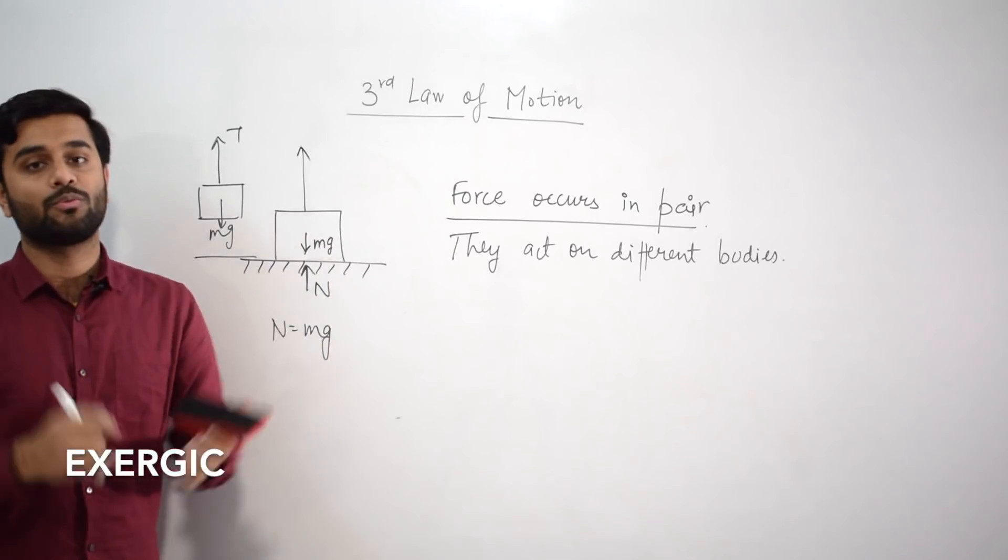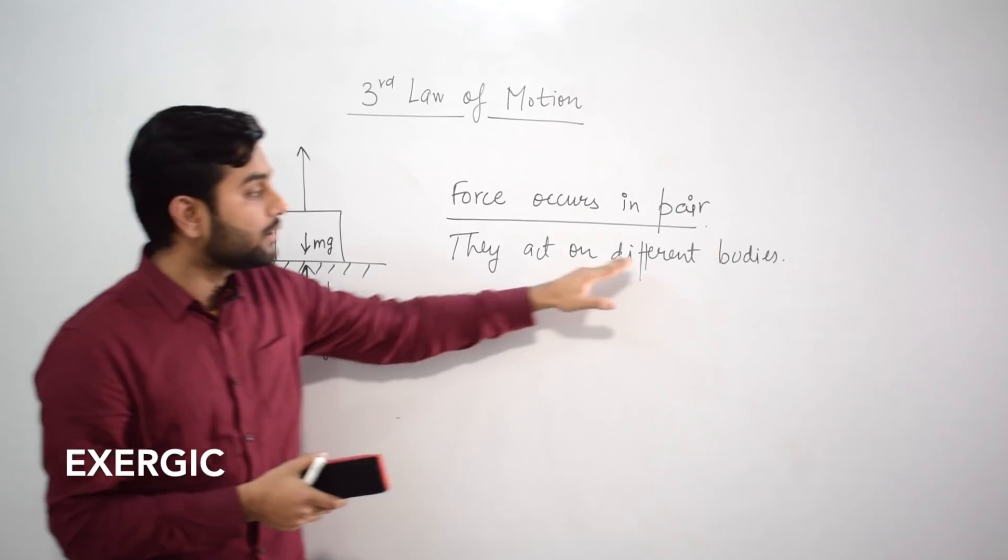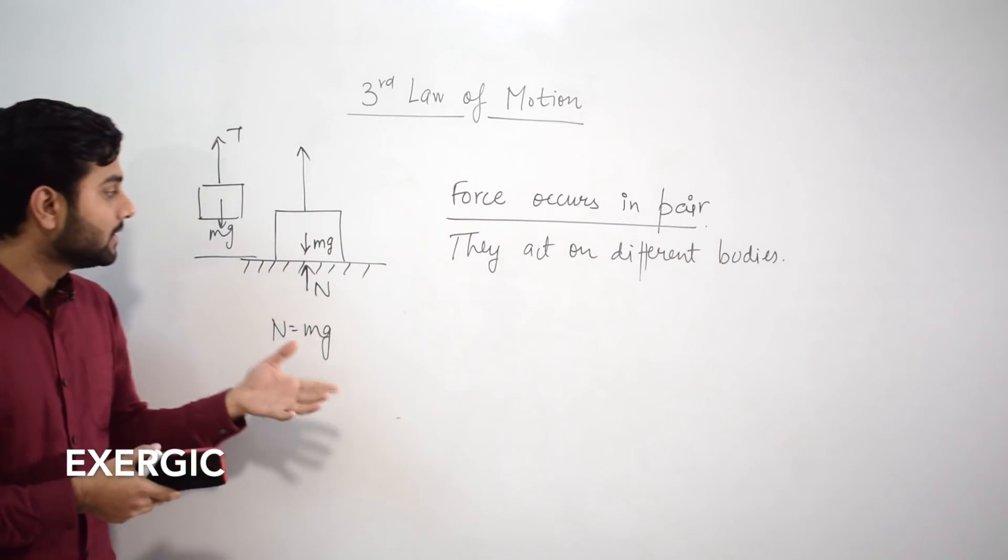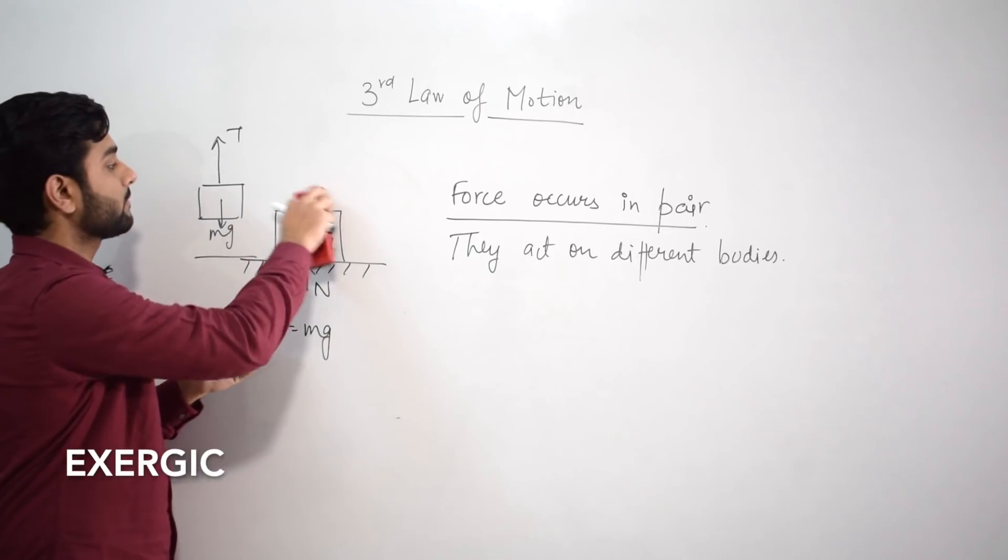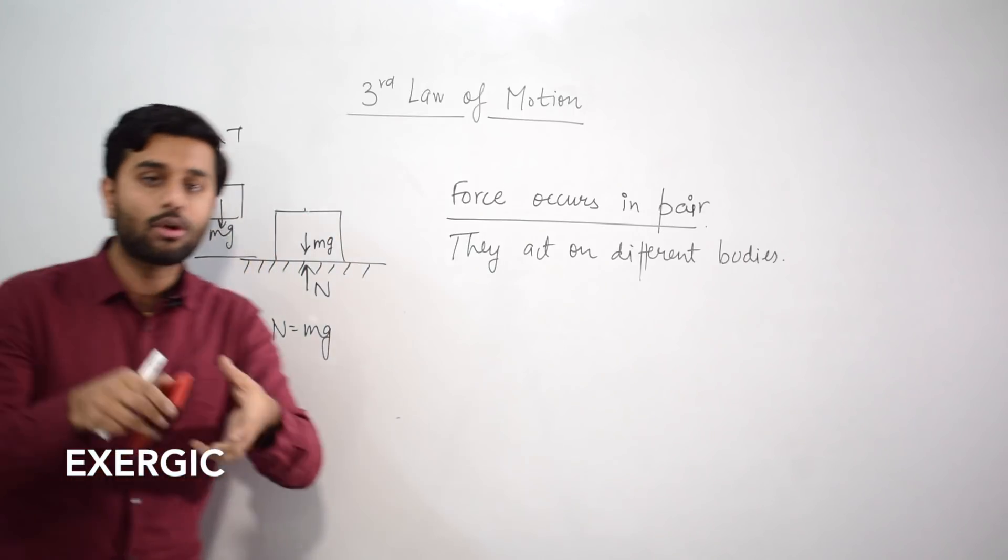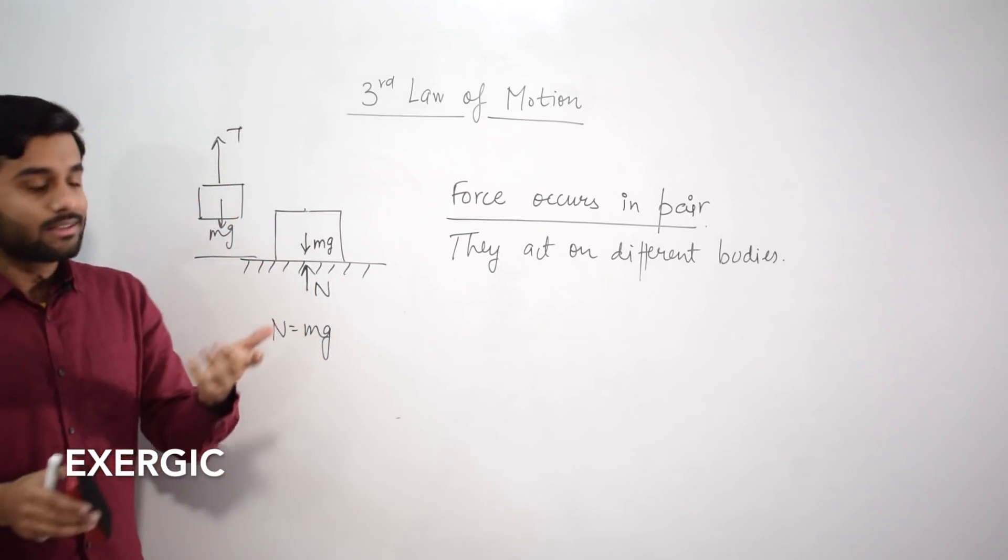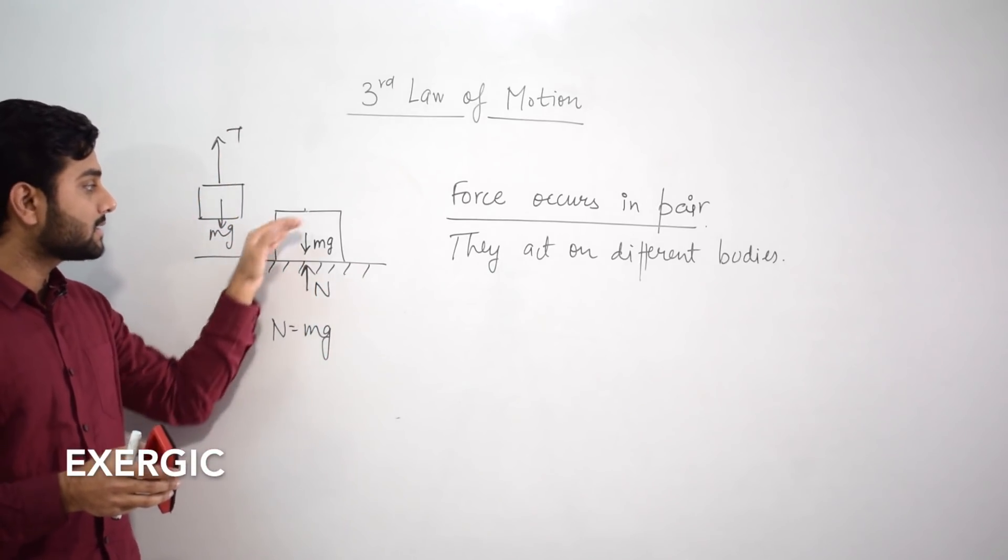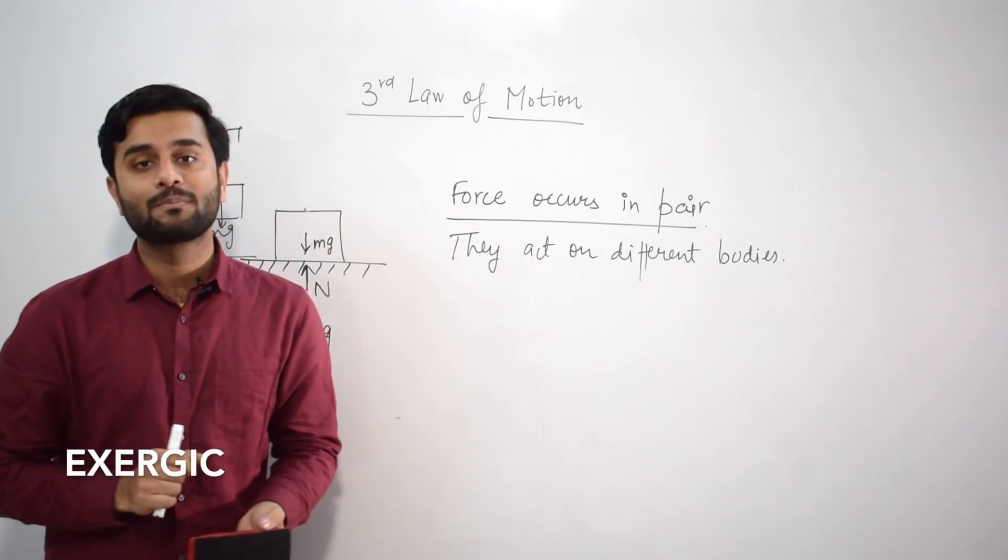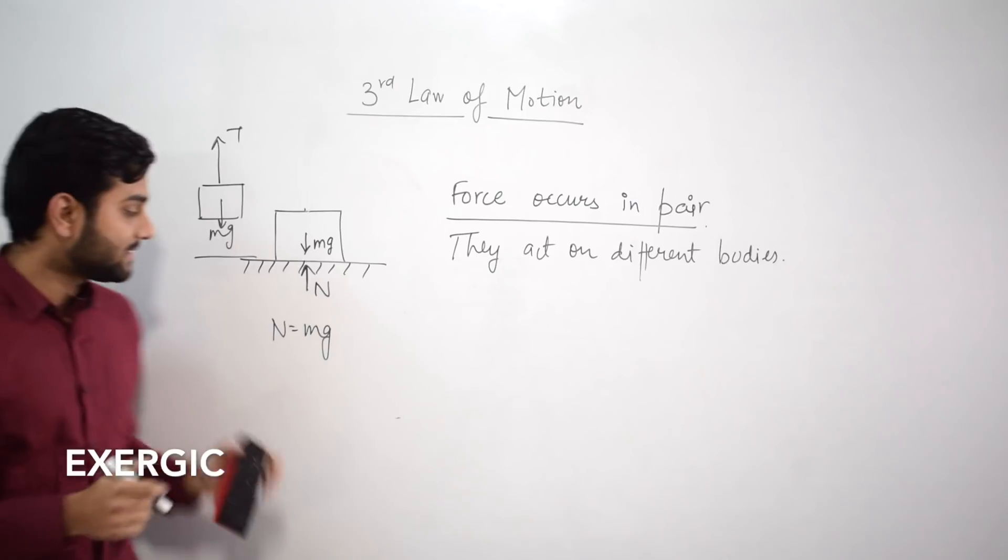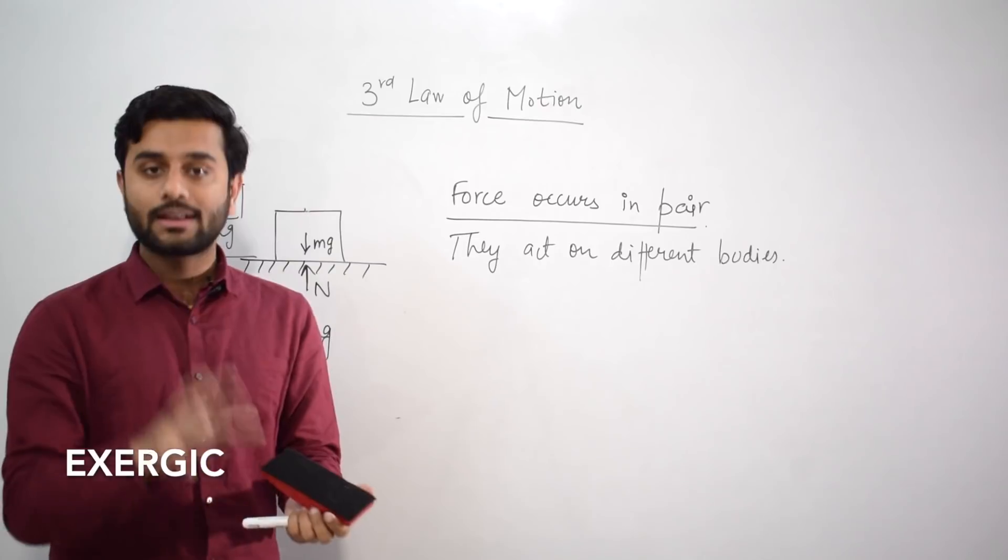It violates the statement in the law that forces need to be present in pairs. Don't think that now mg has formed a pair with T. That's not how it works. Force pairs are of similar nature of forces. And from the second statement also you can see that they act on different bodies. You can see that mg is acting on the block itself, and N is also acting on the same block itself. So clearly when you say that a reaction force is generated as a result of this weight, this is not happening by Newton's third law.